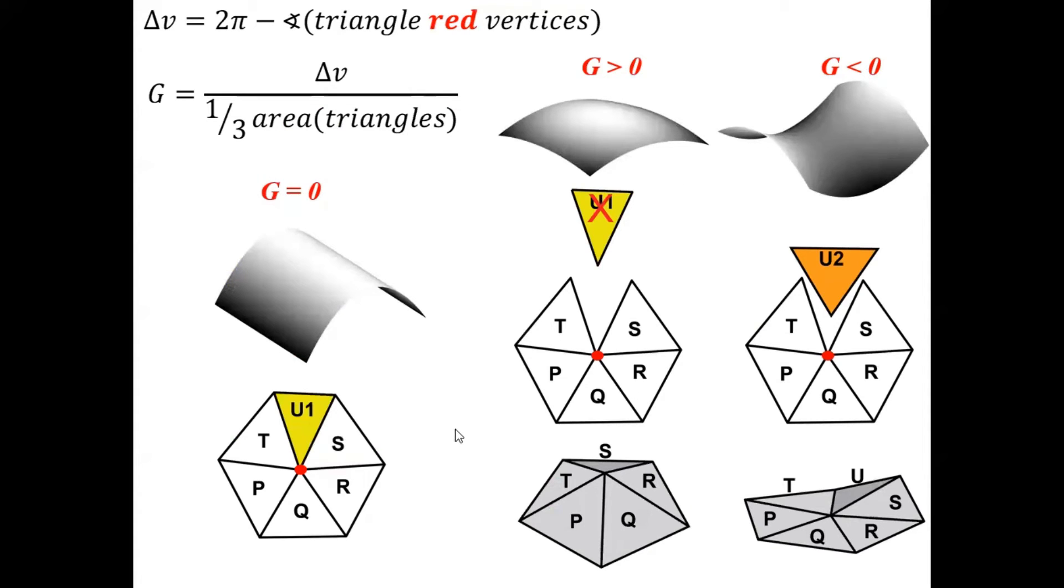We can use the triangles to approximate the surface, and in case of zero Gaussian curvature, these triangles make a flat piece of paper. If we remove one of the triangles and glue the remaining edges, then we obtain the positive curvature case.